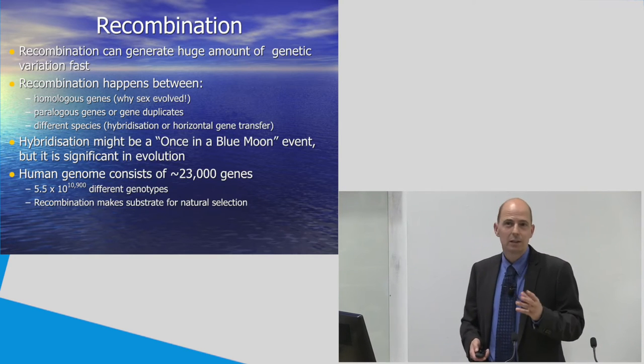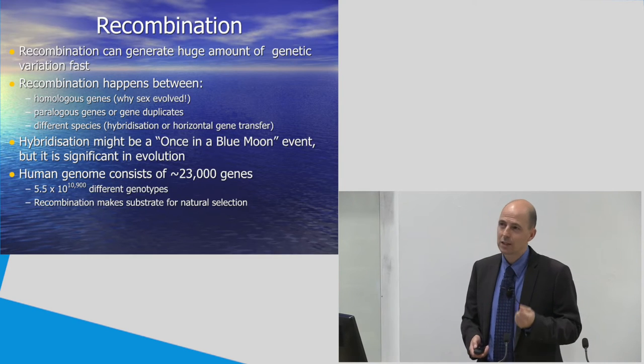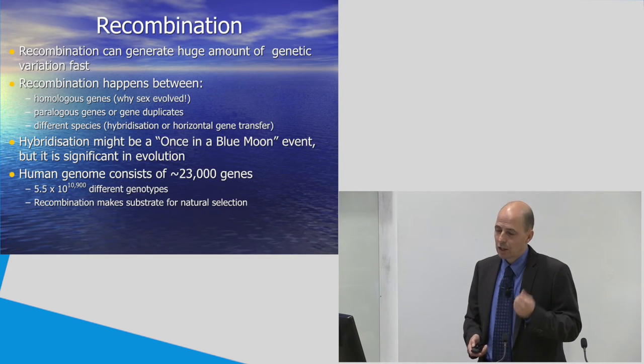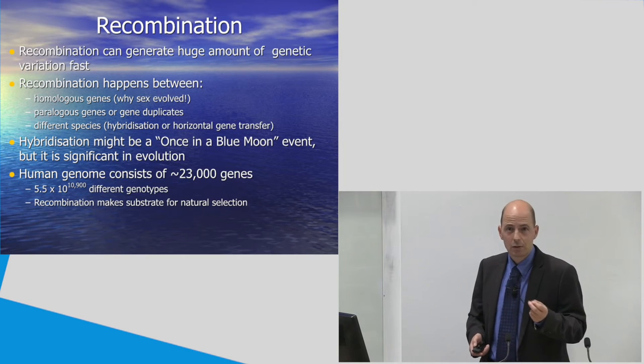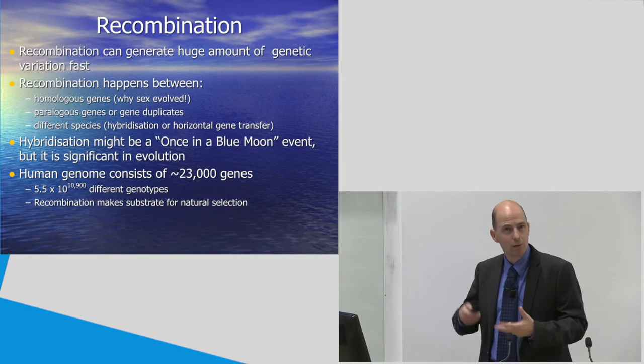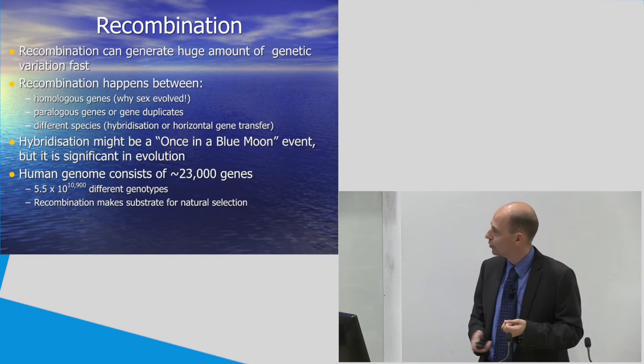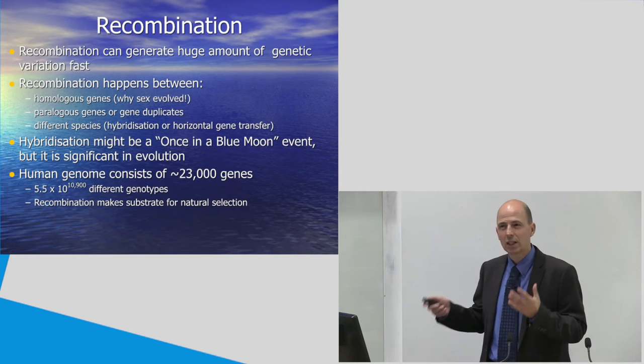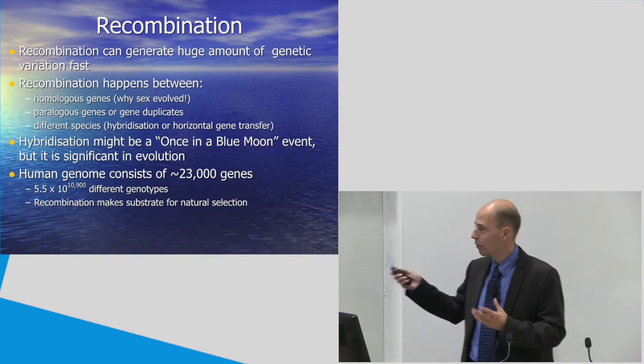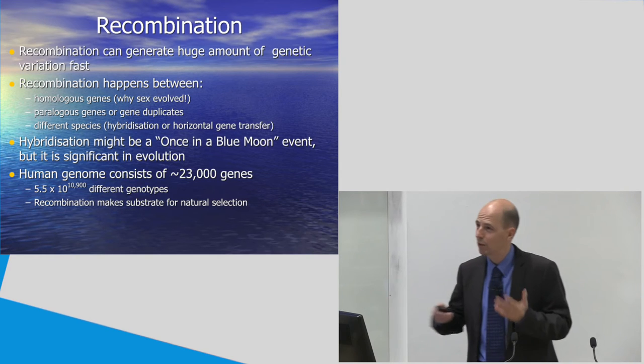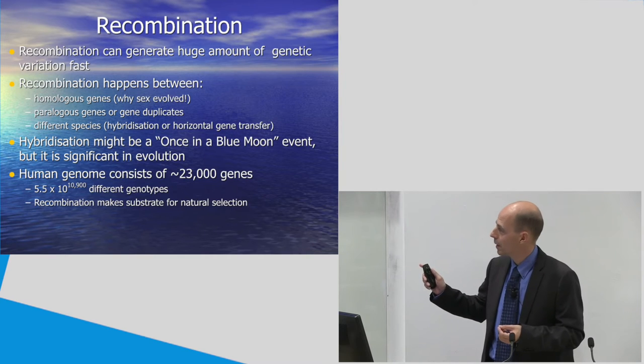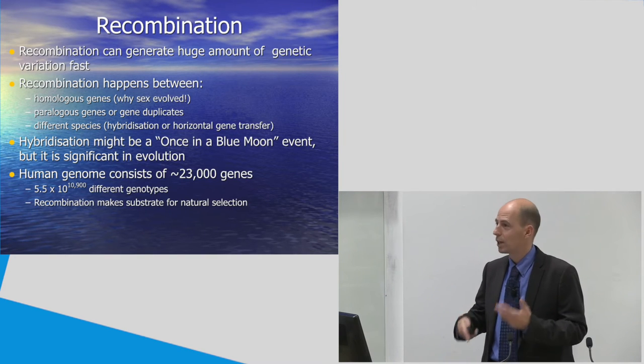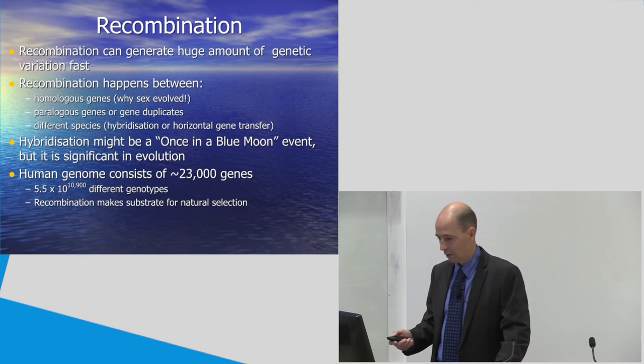Now, hybridization is rare. It's once in a blue moon event. But it's really significant in evolution. Take, for example, the human genome. It consists of about 23,000 or so genes. If each of those genes had just two alleles each, the number of recombinants and new genotypes it could generate is 10 to the 11,000 almost. That's an astronomically large number. In fact, astronomically doesn't quite capture it because there's only 10 to the 25th or so stars in the visible universe. This is a really huge number. Recombination makes a lot of substrate for natural selection to act on. And this is why it is an important force.